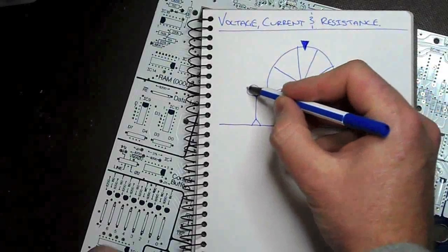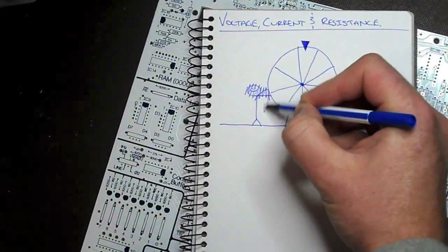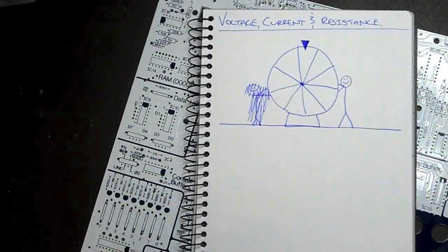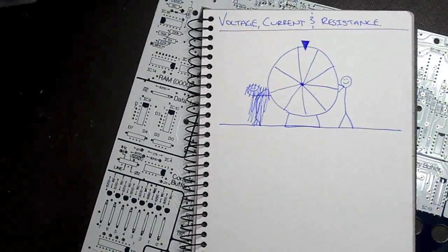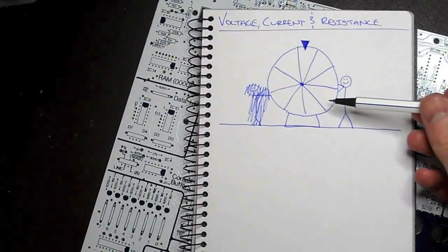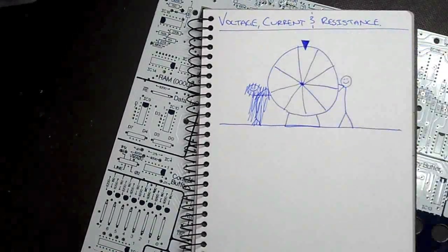So, what we're looking for with voltage is we need to have a potential difference. If there's no potential difference, we get no current flow, and in this example, we don't get the wheel turning.